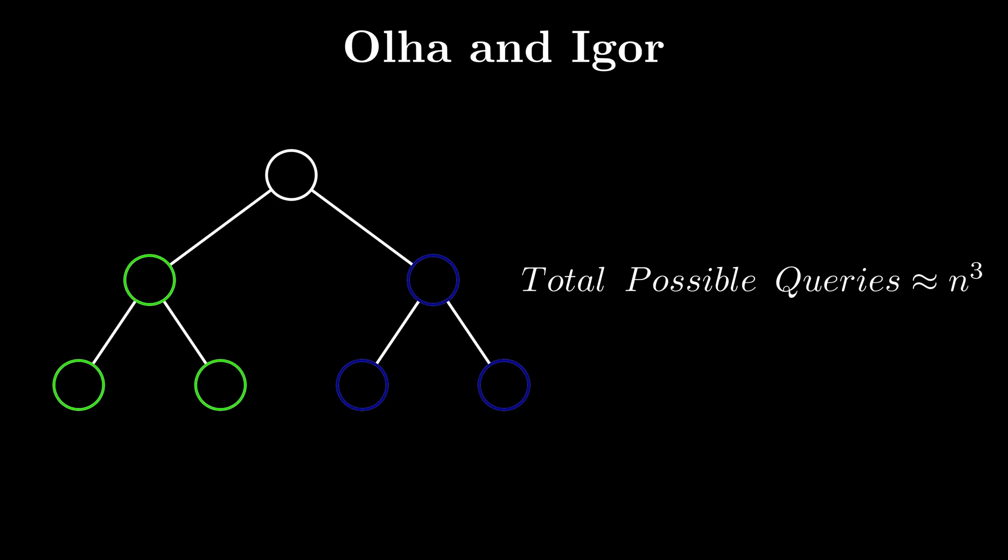We can split the tree at the root into two parts, which have a size of approximately n by 2 nodes each. Now for the root to be the answer to a query, one of u, v, or w needs to be equal to the root node. The other two need to be from the two different parts which we split the tree into.